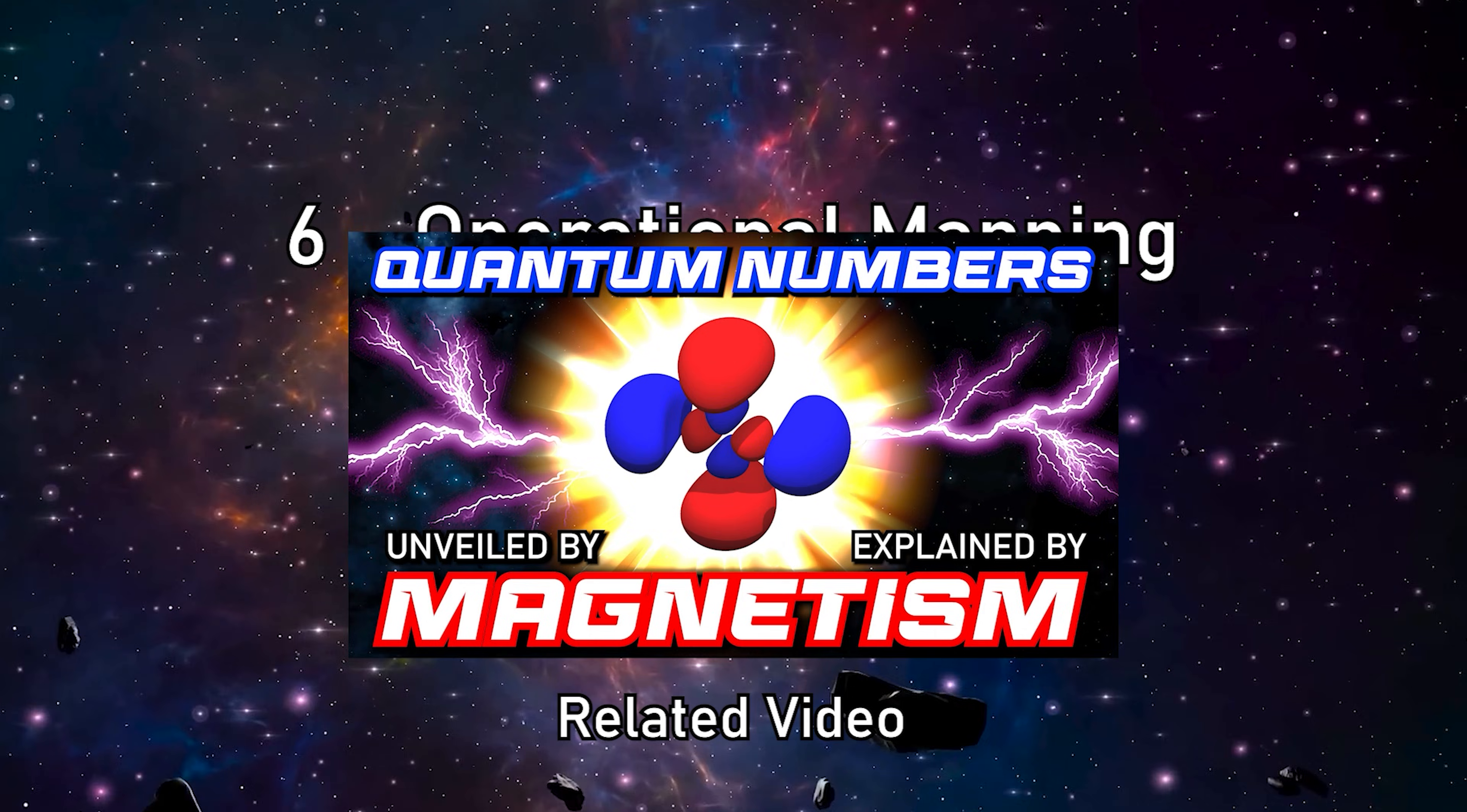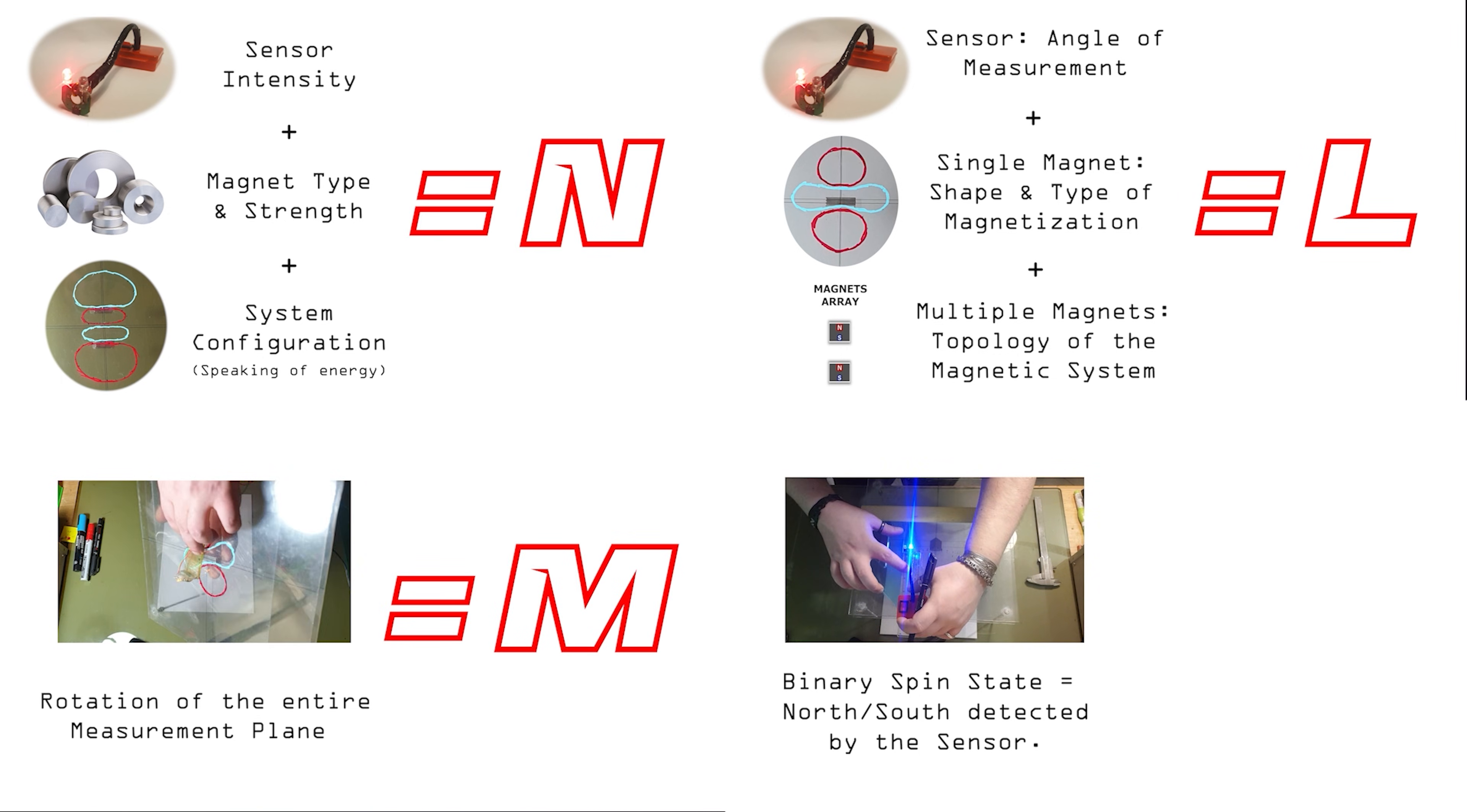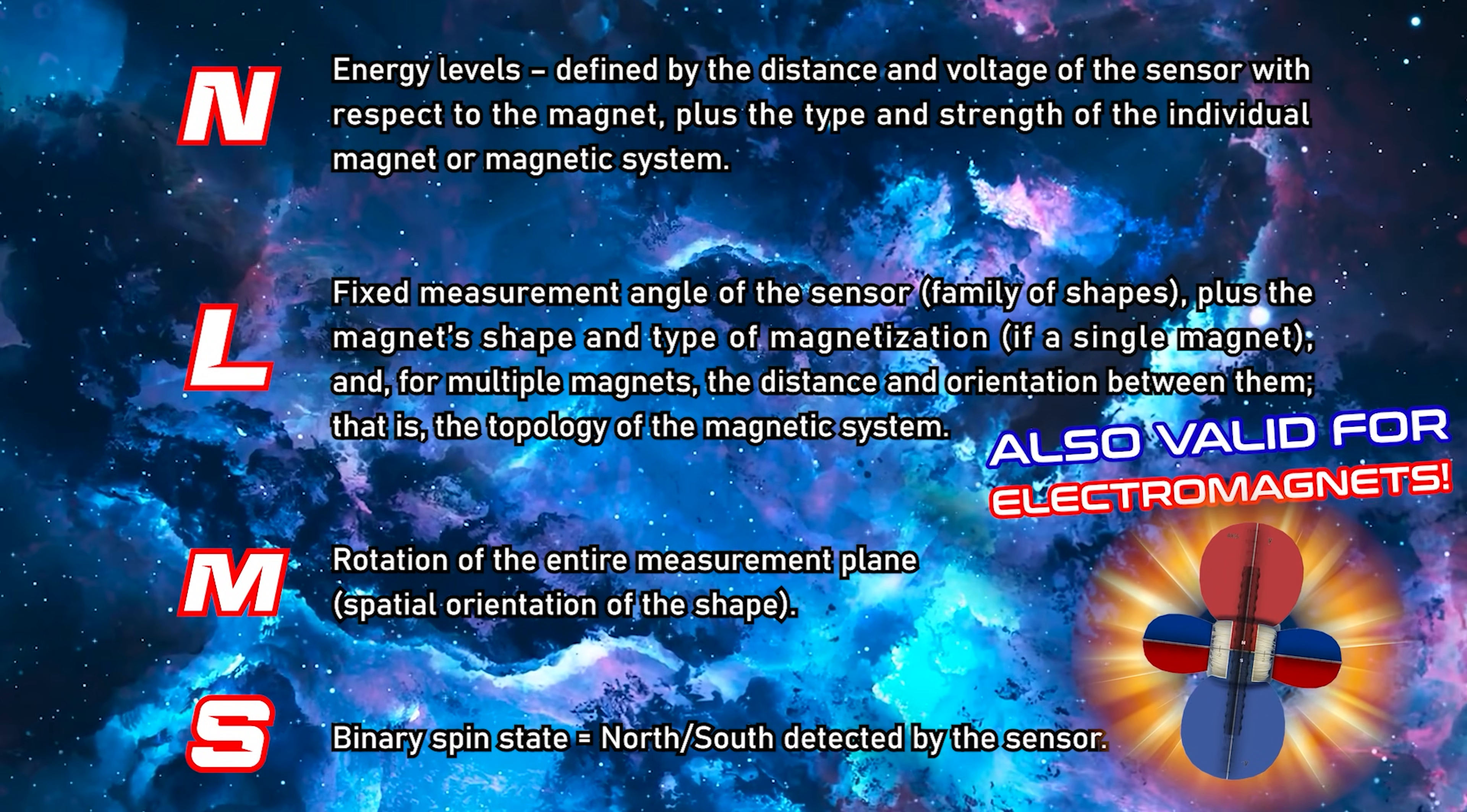6. Operational Mapping. It is possible to translate the quantum numbers that generate these geometries into movements, orientations, polarities, and constraints measurable through Hall-effect sensors. Not as a metaphor, but as an operational mapping between macroscopic physical parameters and well-defined geometric structures.